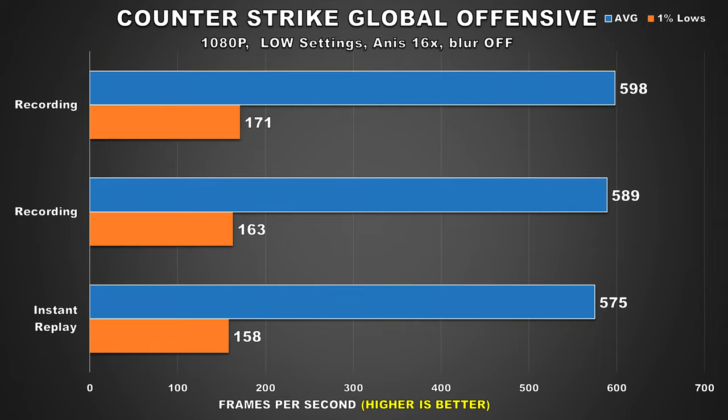Up next we have CS:GO, a very popular eSport title which is really easy to run, as is evident by the performance attained here. I included this title because many will want to stream an eSport game like this, and it's crucial to see what kind of performance impacts one could experience since the highest FPS is heavily desired. Here, recording impacts are a bit more profound — we see a 9 FPS loss and the 1% lows drop by 5%. With instant replay, the impact is larger: a 4% drop for the average frame rate and an 8% decrease for the 1% lows. Still at 575 FPS average, I doubt anyone will care much about the performance loss — performance is still going to be buttery smooth.